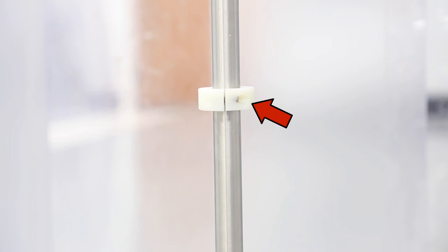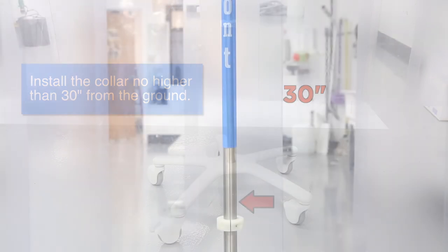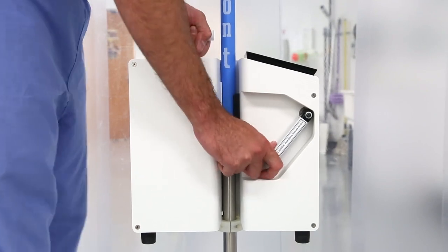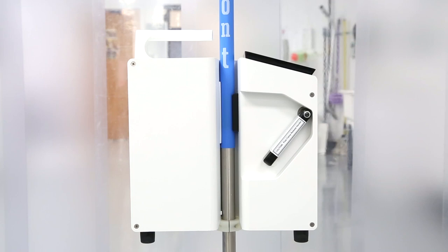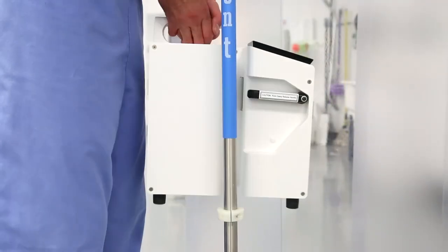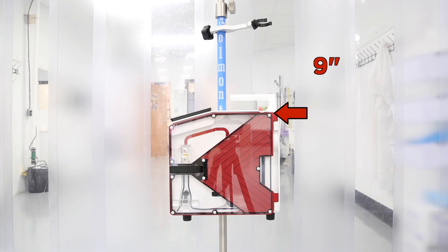First, install the collar on the IV pole just beneath the system, no higher than 30 inches from the base of the IV pole. Mount the system above the collar by pushing down on the pole release handle. Check that the system is secure before proceeding. To remove the system, lift up on the pole release clamp while holding onto the top handle. This will prevent the system from falling. Install the small reservoir support approximately 9 inches above the top of the system.